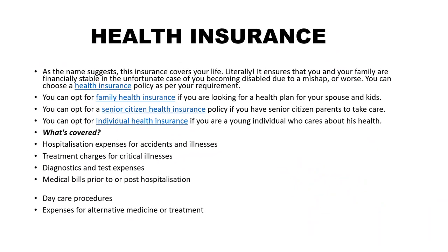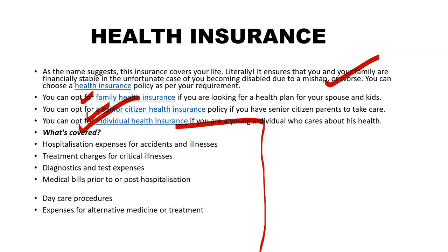Next is health insurance. As the name suggests, health insurance covers your life against mishaps. It ensures that you and your family are financially stable in the unfortunate case of you becoming disabled due to a mishap or worse. Health insurance has three types: family health insurance, senior citizen health insurance, and individual health insurance. Coverage includes hospitalization expenses for accidents and illnesses, treatment charges for critical illnesses, diagnostics and tax expenses, medical bills prior to or post-hospitalization, day care procedures, and expenses for alternative medicine or treatment.